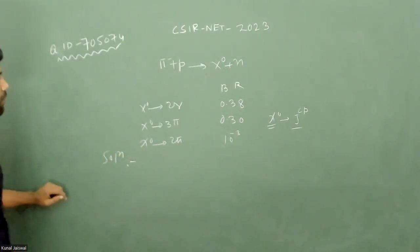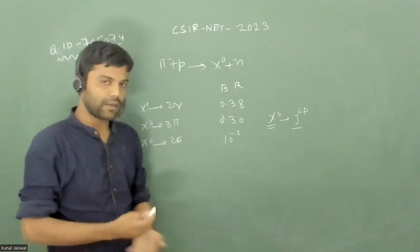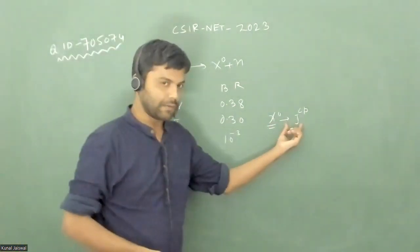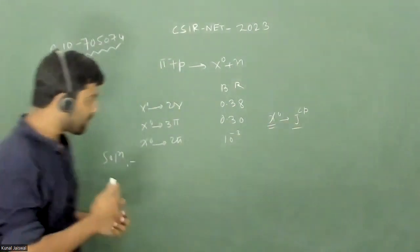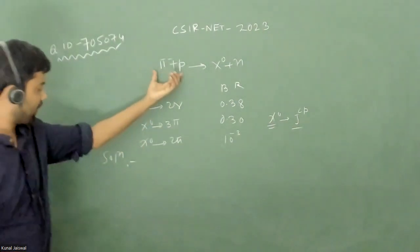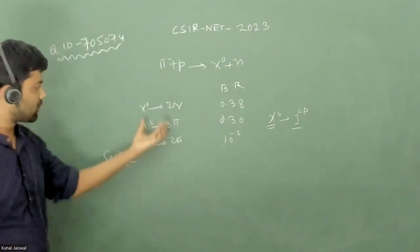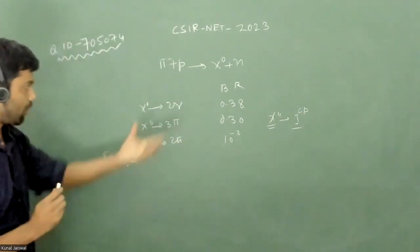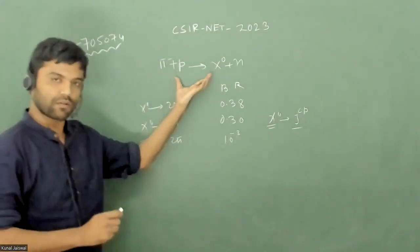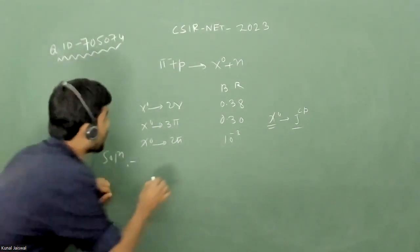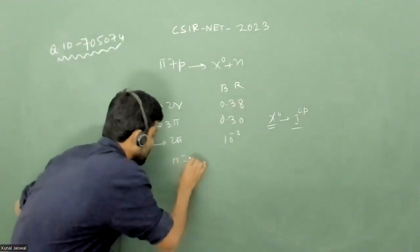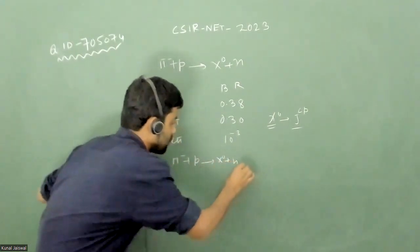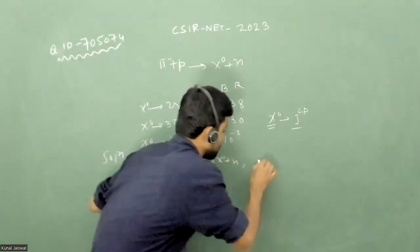For any interaction or decay, spin will be conserved. So first we calculate the spin. All three decay processes are allowed, in addition to the original interaction. We have pi minus interacting with proton producing x0 plus neutron, and we will take all possible decays: x0 to 2 gamma, x0 to 3 pi, and x0 to 2 pi.